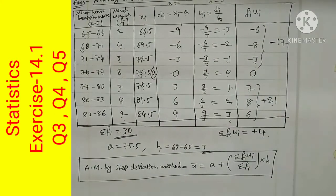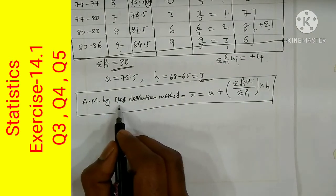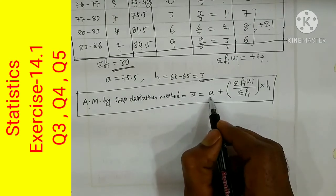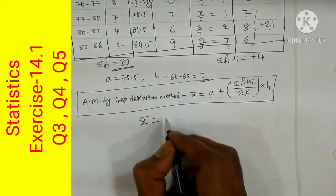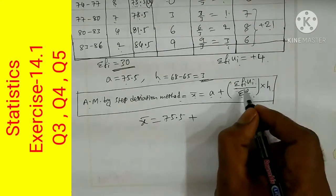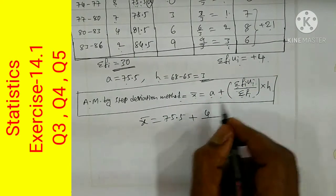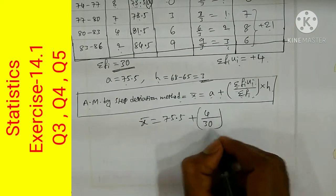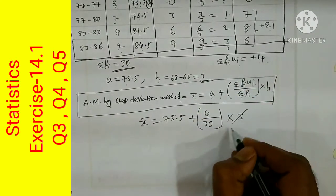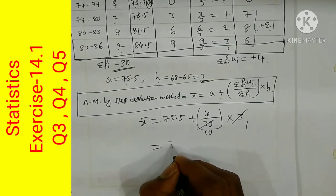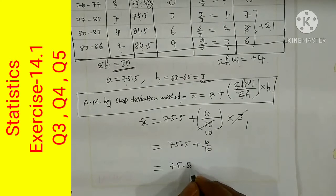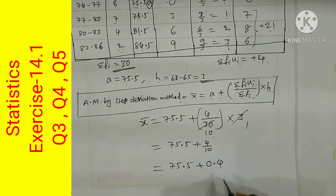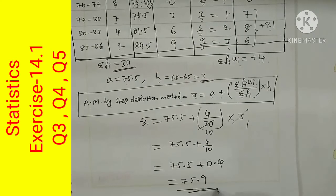Sigma Fi·Ui is +4. Substituting into the step deviation formula: X-bar = A + (Sigma Fi·Ui / Sigma Fi) × H = 75.5 + (4/30) × 3 = 75.5 + 4/10 = 75.5 + 0.4 = 75.9. This is the answer for question 4.